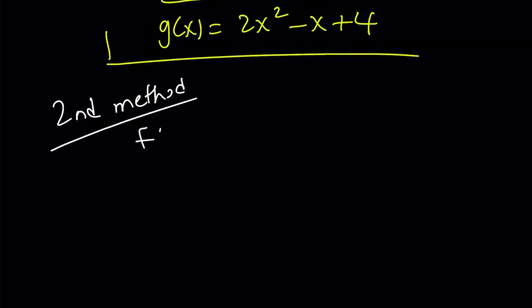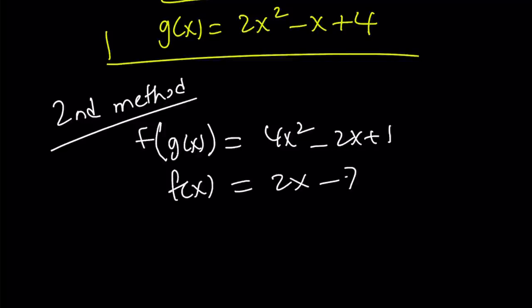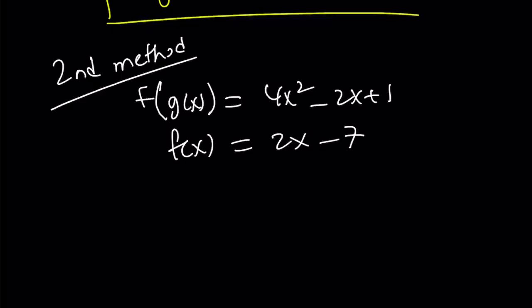We have f(g(x)) equals 4x squared minus 2x plus 1, and we have f(x) equals 2x minus 7. Since I'm given a definition for f, I can directly apply it here. So f(x) is 2 times x minus 7. So if you have f(apple), this is going to be 2 times apple minus 7, right?